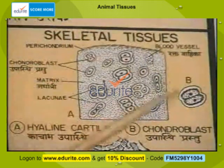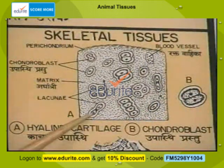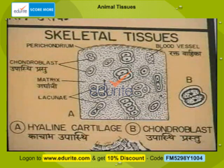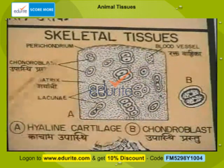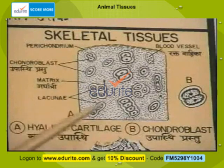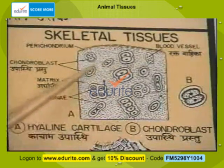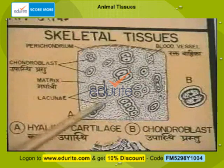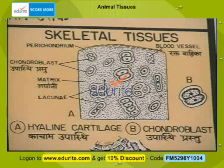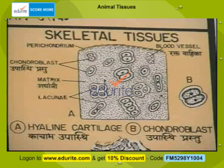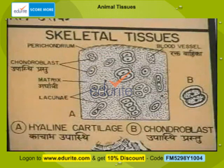Cartilage is another kind of connective tissue, also called gristle. In cartilage tissue, there is a protein matrix which appears bluish, and in the matrix are the cells called the chondrocytes. Cartilage is usually found in places which require toughness and elasticity. The earlobes, the tip of the nose, and the rings on the respiratory tube are all made of cartilage.